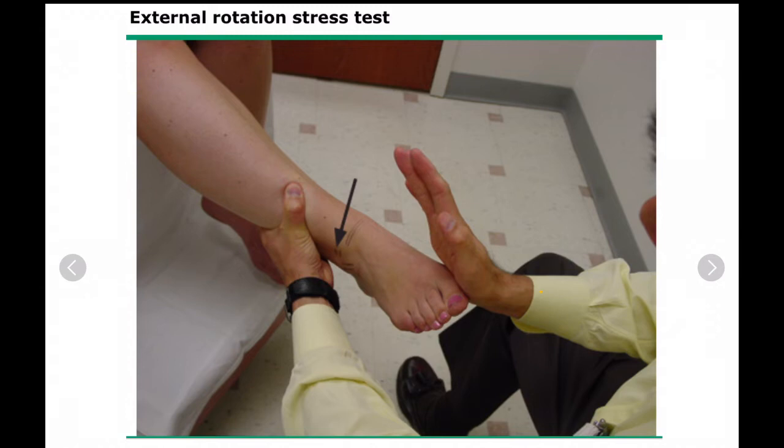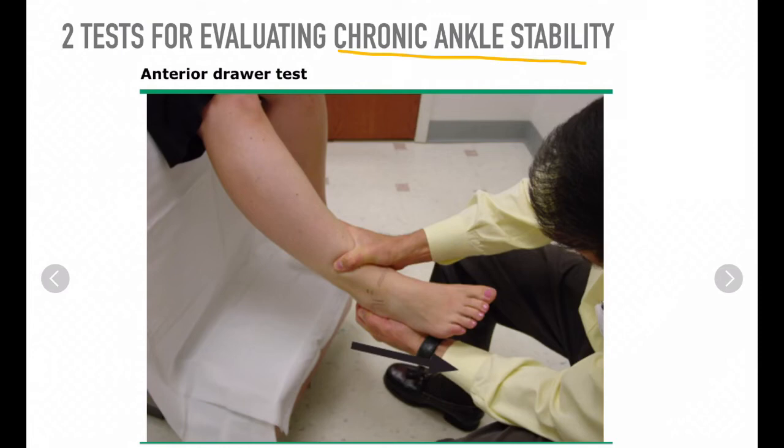Second, the external rotation stress test — a provocative test for syndesmotic injury. The examiner supports the lateral fibula and tibia with one hand and gently forces external rotation with the other hand. Pain at the distal syndesmosis confirms distal syndesmotic ligamentous injury.